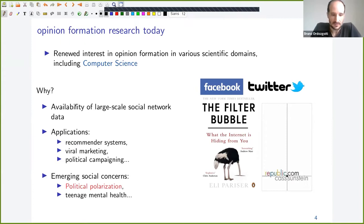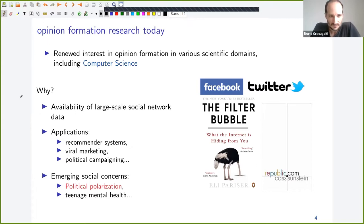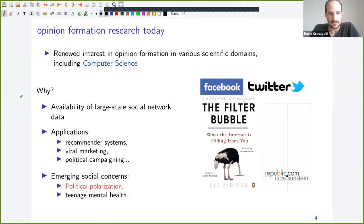We can speculate as to why this has happened. Now a lot of our interactions happen on social networks, and these interactions are indeed quite simplistic in some occasions. The data that these interactions generate has become available in large amounts. Studying these models has applications in many domains like recommender systems, marketing campaigns, political campaigns, and so on. There are also emerging social concerns like political polarization and teenage mental health.